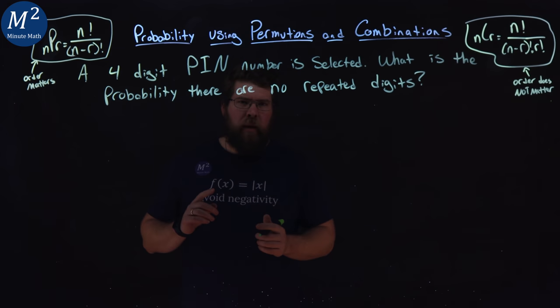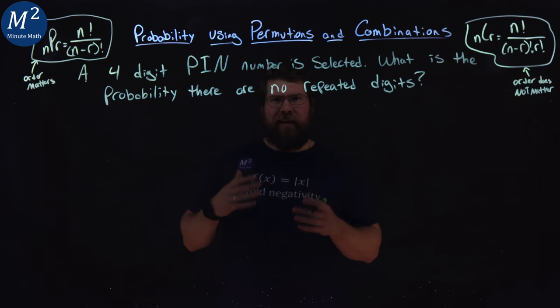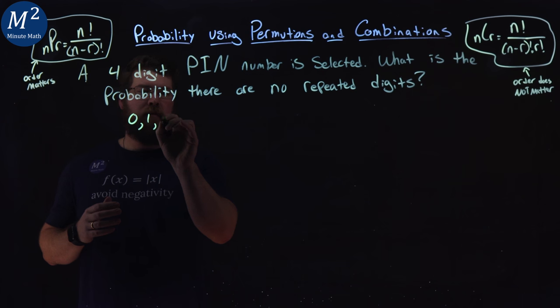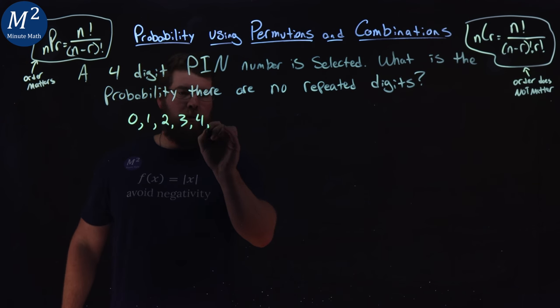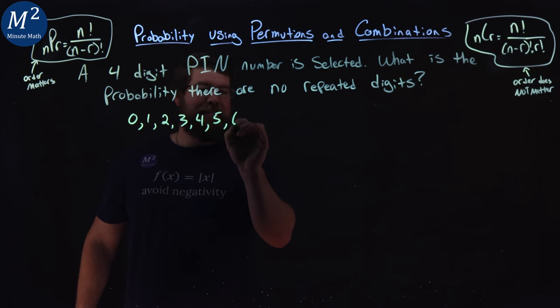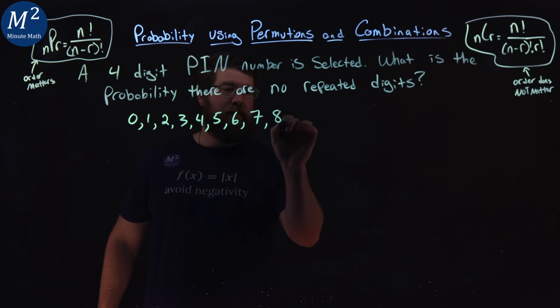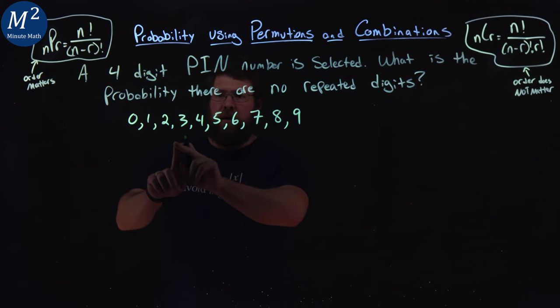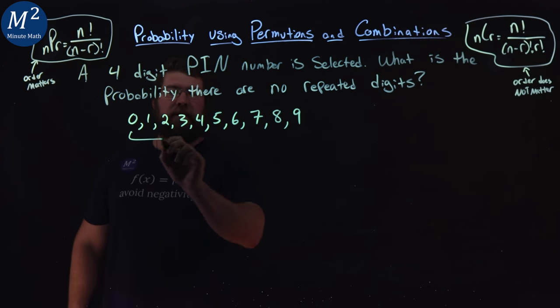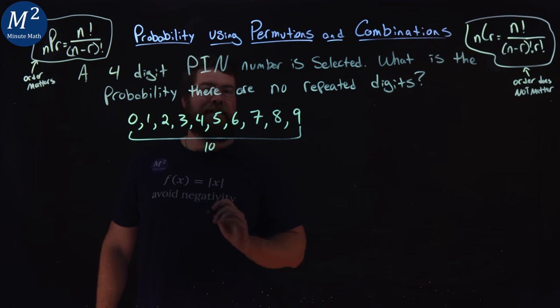A PIN number, right, each digit has the option of either 0, 1, 2, 3, 4, 5, 6, 7, 8, 9. So these are 10 options here for each digit.